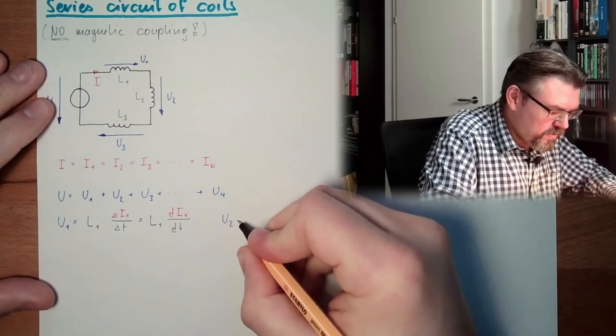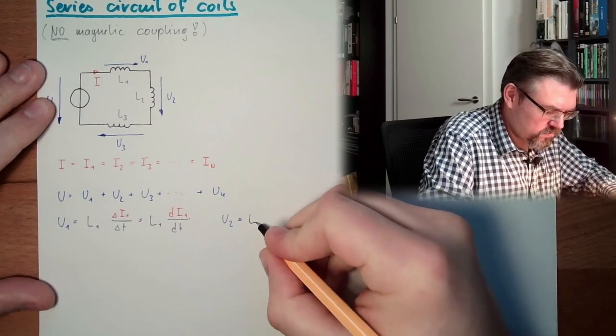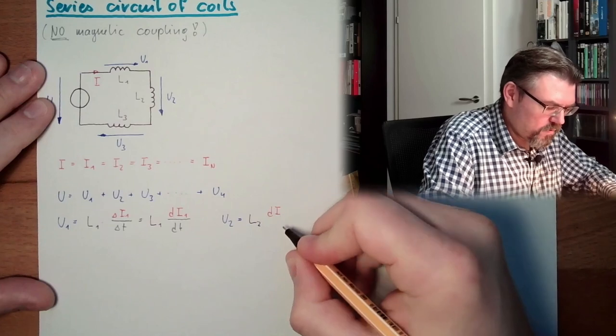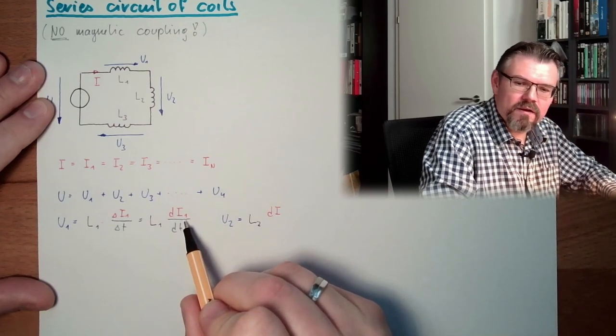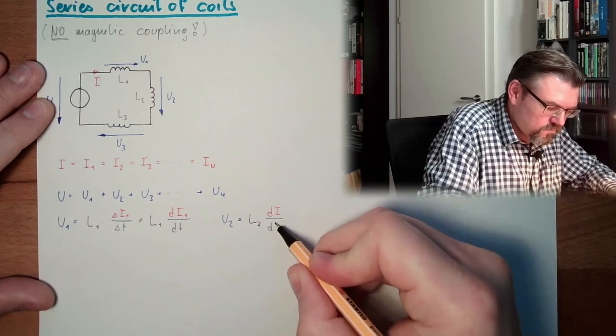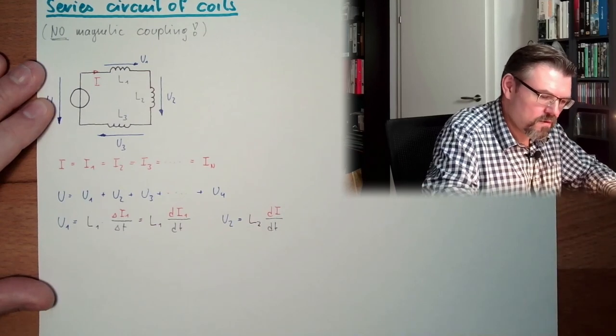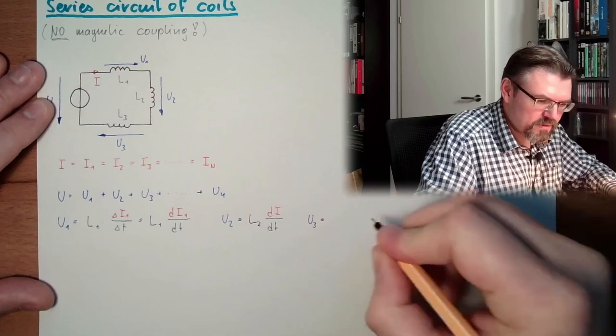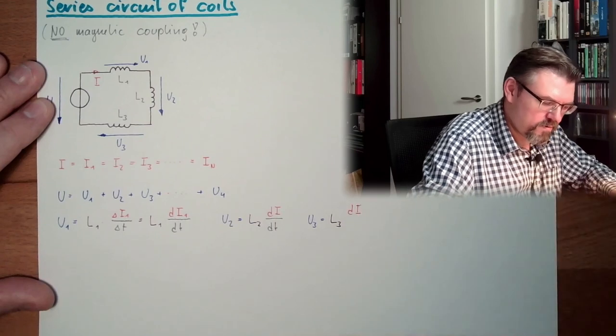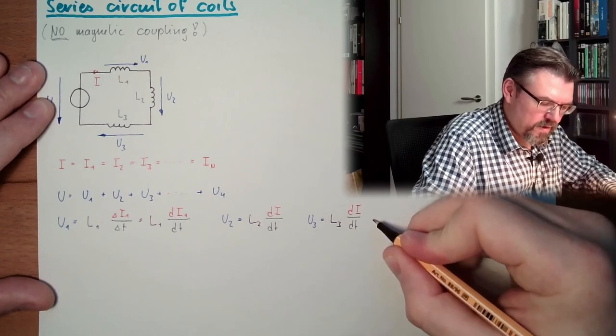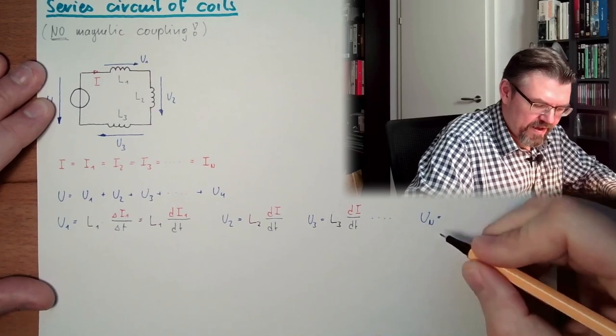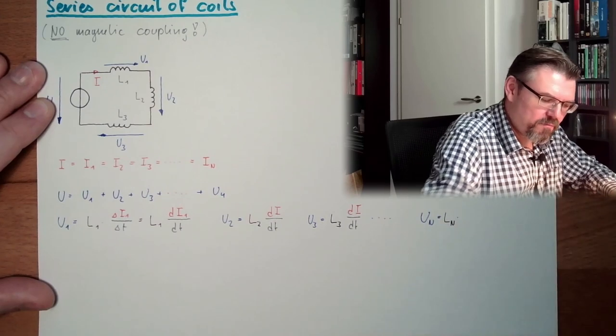So, we had then U2 equals L2, the change rate of I. But it's always the same I. U3 is L3, change rate of I, and so on, up to UN, which is LN, multiplied by the change rate of I.